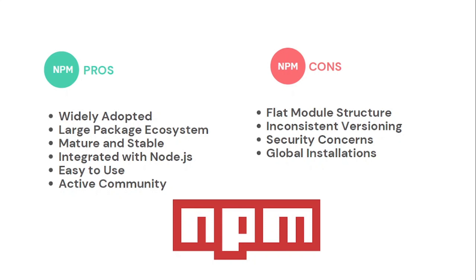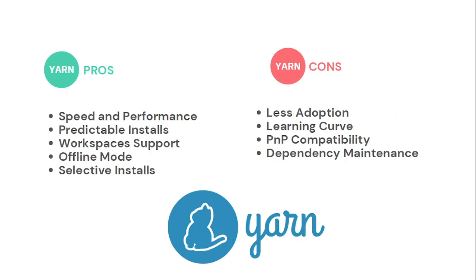Now let's look at some cons of npm. npm has a flat model structure, which means it can lead to dependency conflicts and duplicated packages. npm also has inconsistent versioning — packages or dependencies can differ across environments, causing unexpected behavior in your applications. There are also some security concerns and issues with global installations.